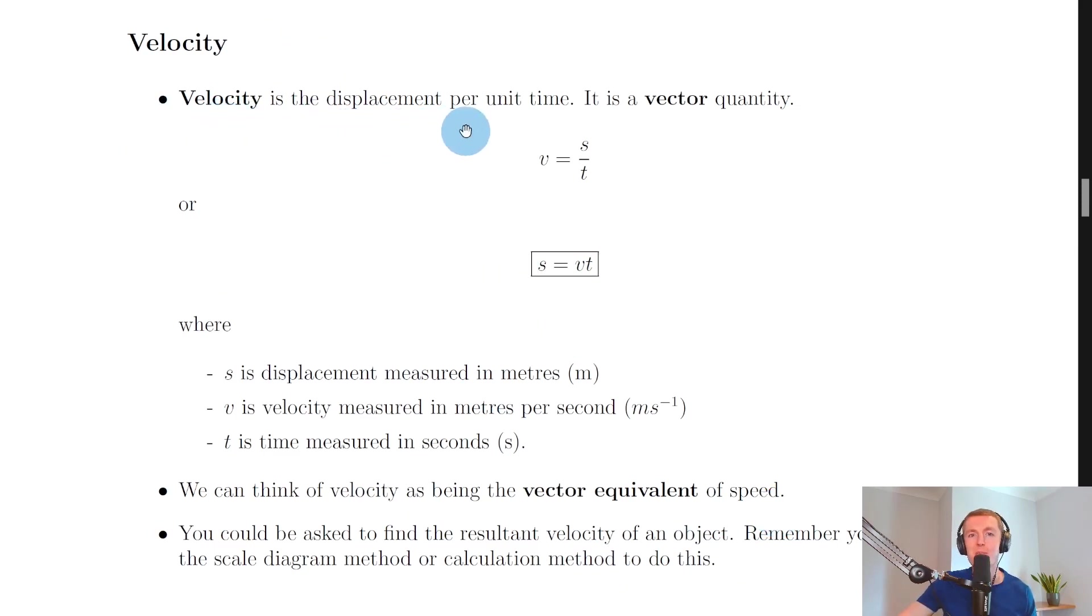So firstly we define velocity as the displacement per unit time and remember the units of time are seconds. So per means divided by. So we've got displacement divided by time or displacement each second.